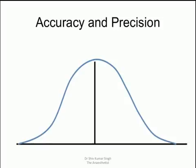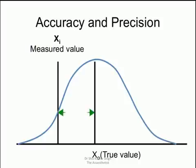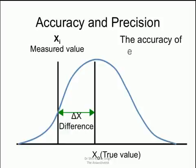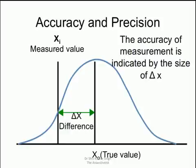So if you look at accuracy and precision as a bell graph, x0 is true values and xi is the measured values. The difference between them should be as small as possible. So they should be as close to each other as possible for any equipment or machine to be accurate and precise.